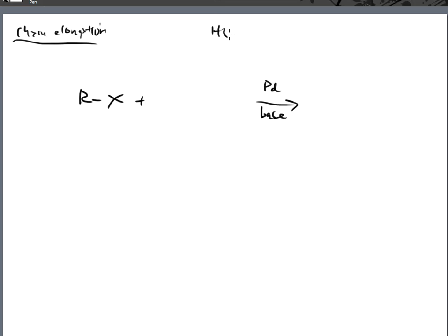For the Heck to go forward, we take our halogen and bring in some type of carbon-carbon double bond — an alkene. The R group off of it can be whatever it wants to be. These alkene reactions with palladium will react with halogenated alkenes and form a coupling reaction that couples two carbons together.